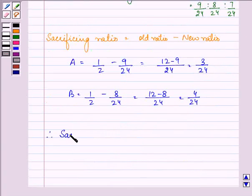Therefore, we can write that sacrificing ratio is equal to 3:4.